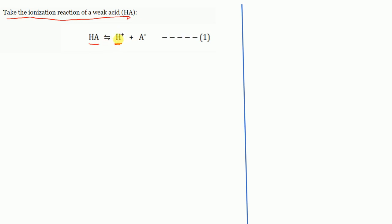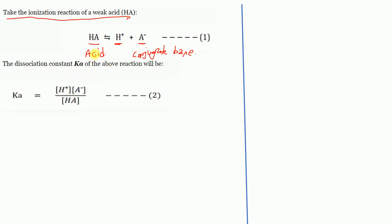After giving away its proton, what is left is A⁻ with a negative charge. So HA dissociates into H⁺ + A⁻ at equilibrium. This is the dissociation of a weak acid, and A⁻ is the conjugate base. The dissociation constant Ka for the reaction HA ⇌ H⁺ + A⁻ can be written as: